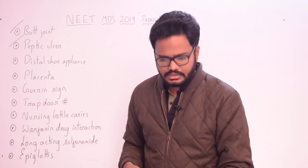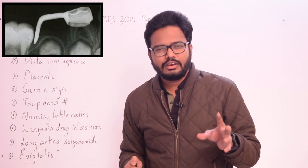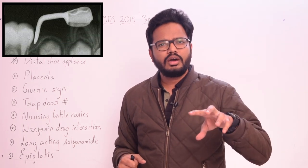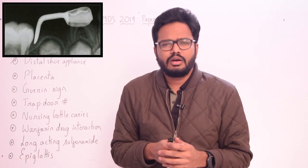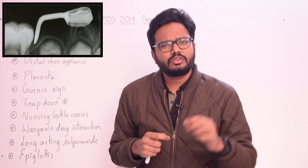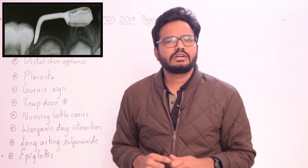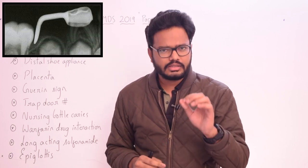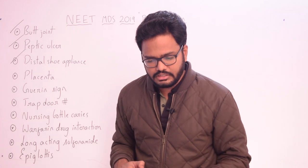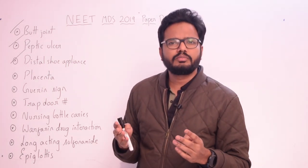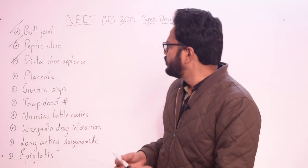Now coming to the distal shoe appliance: we use a primary molar as an abutment whenever there is loss of the primary second molar, in order to actively guide the eruption of the permanent first molar. The intragingival extension of the distal shoe has to be 1 to 1.5 mm gingival or cervical to the mesial marginal ridge of the permanent first molar. Roche designed or advocated a crown and band appliance with a distal intragingival extension at this depth.